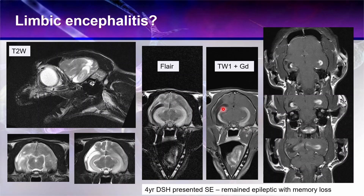We have contrast enhancement of the mesotemporal lobes that is really quite dramatic. We also have leptomeningeal contrast enhancement, which is much more pronounced on this side compared to the more normal side. Of course, the meninges will enhance with a little bit of contrast because they don't have a blood-brain barrier. We definitely have an active ongoing inflammatory process that involves bilaterally the limbic area — it is limbic encephalitis in that respect — but it does also appear to involve the cortex.